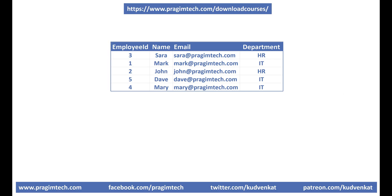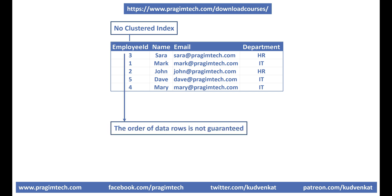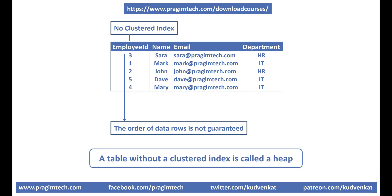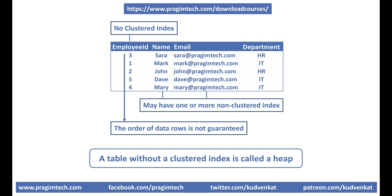Consider this employees table. There is no clustered index on this table, which means the physical order in which data rows are stored is not guaranteed. A table without a clustered index is called a heap. A heap table may have one or more non-clustered indexes. We discussed all these heap table concepts in our previous video.